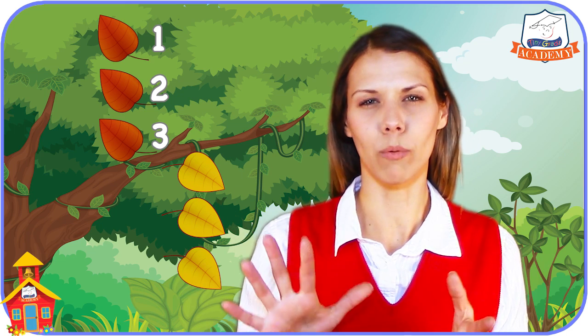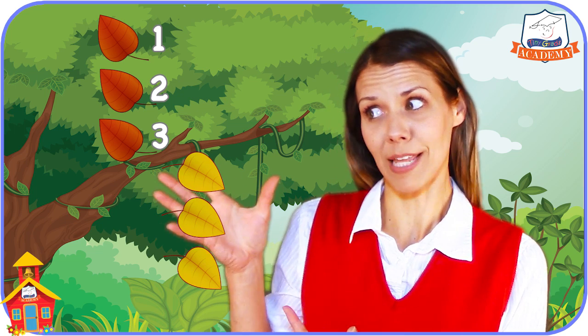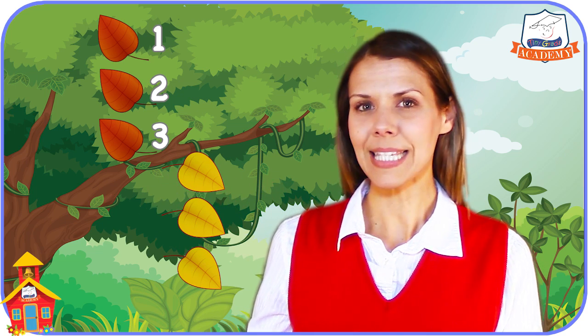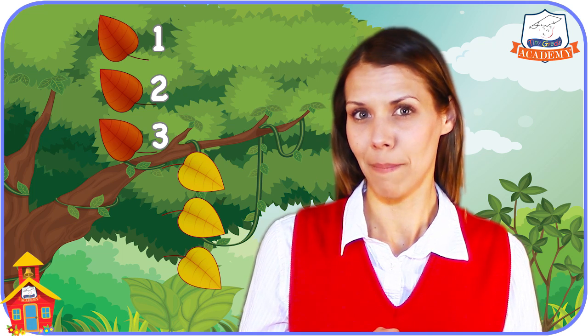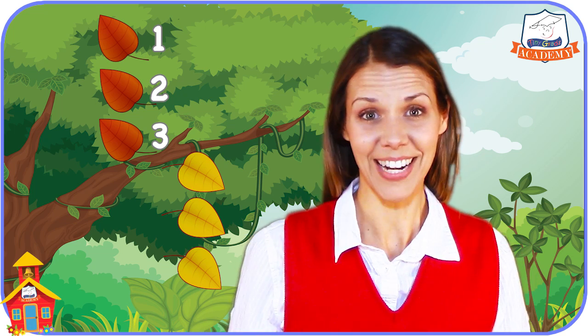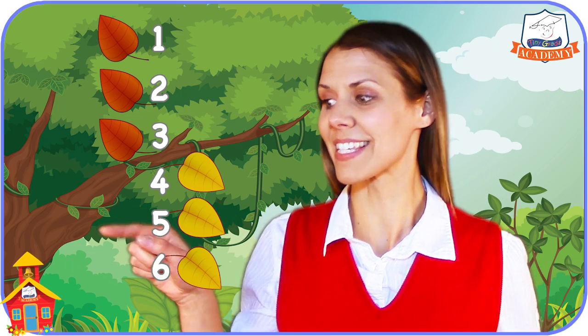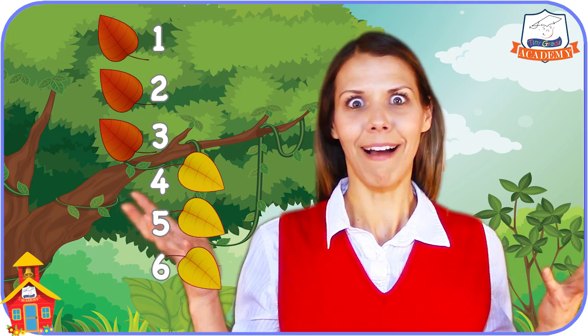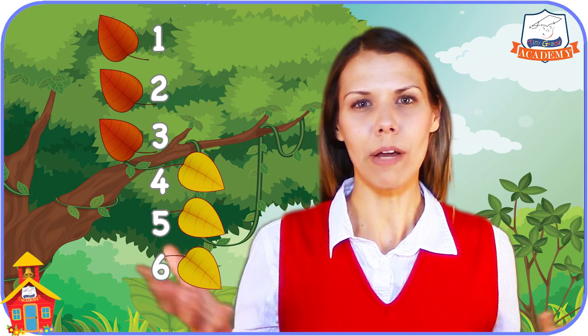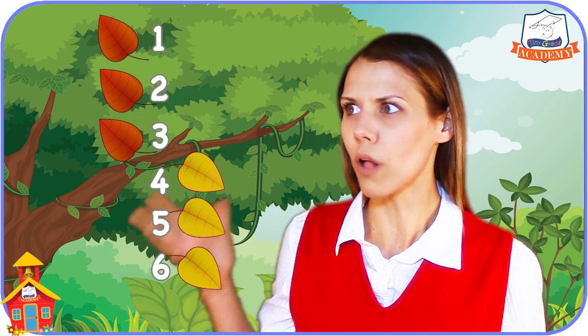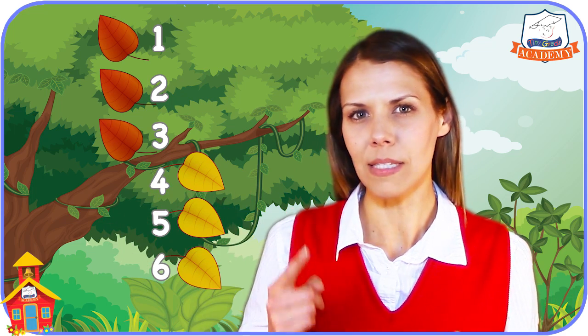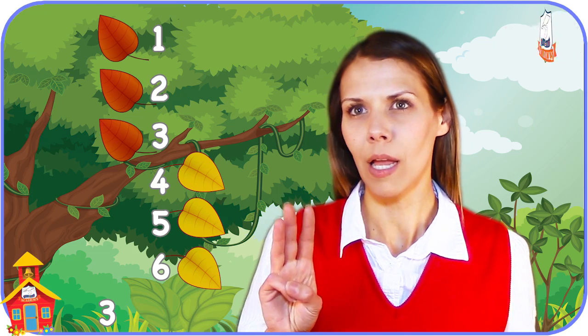This is how we'll do it. Let's start from the number three because there are already three red leaves. Let's count up three more from there because there are three yellow leaves. Ready? Four, five, six. Well that was easy! So there are six leaves here all together. That means three plus three equals six!